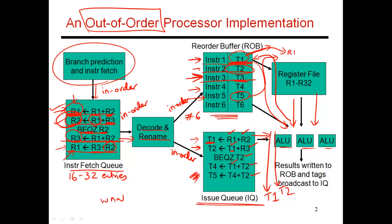If the branch prediction was wrong, you have to squash every instruction that comes after it — the reorder buffer after instruction 3 gets cleared out, the issue queue after instruction 3 gets cleared out, and everything in the instruction fetch queue also gets cleared out. But let's assume the branch was predicted correctly, so you carry on. The fourth instruction is also working at the same time and produces a result in T4, sending out a broadcast saying T4 is available. So finally, the fifth instruction has both of its input operands ready and leaves in the next cycle.